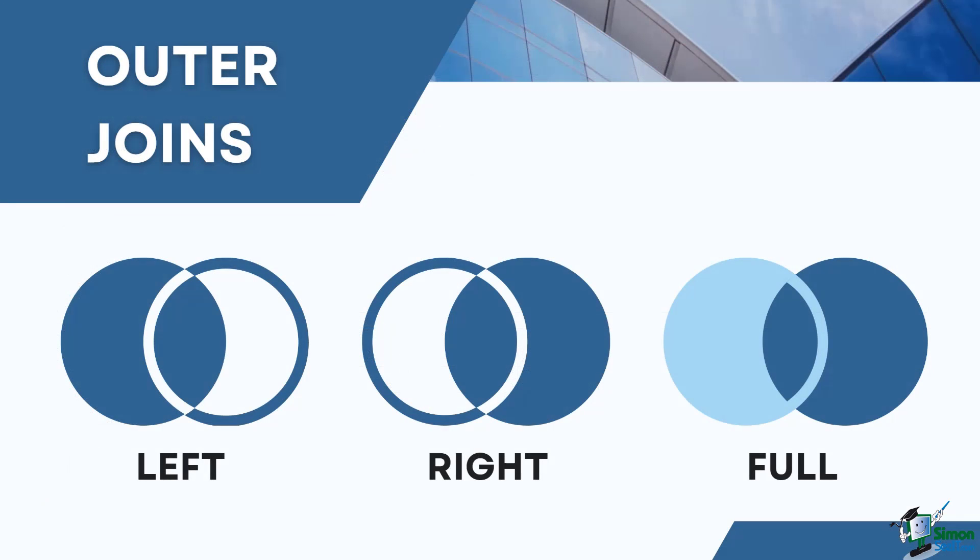The outer join is an extension of the inner join. The SQL standard defines three types of outer joins: left, right, and full. PostgreSQL supports all of these.